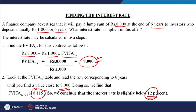So near about 12% rate of interest is what you are going to get by making this annuity investment — depositing 1000 rupees for 6 years to get back 8000 rupees. This is an important application of the future value of annuity: when the interest rate on any investment decision is missing and only lump sum values are given, you can still find out the interest rate.